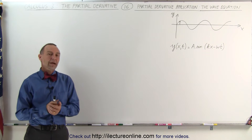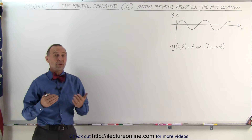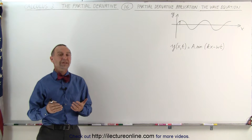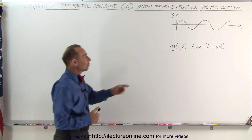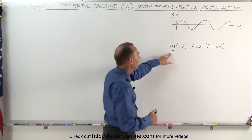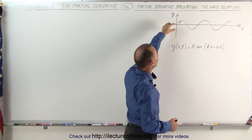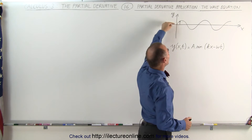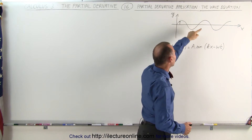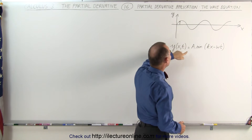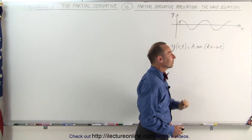Welcome to Electronline. Another very important application of partial derivatives is with the wave equation. Here we have an equation, y as a function of x and t. Y is a displacement away from the x-axis of the wave itself, and it's equal to A times the sine of kx minus omega t.